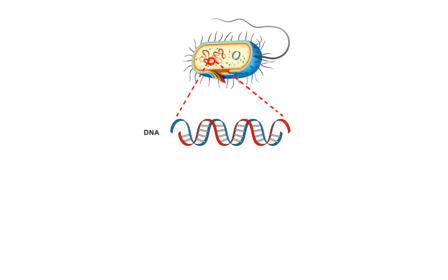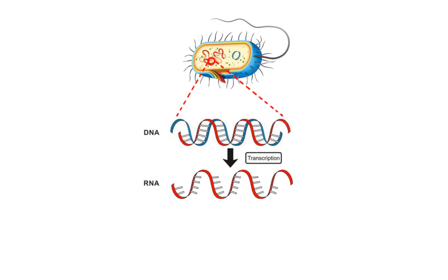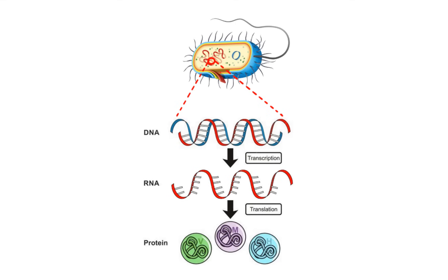This is done by using DNA as a template for the synthesis of an RNA molecule, a process known as transcription. Depending on its structure, RNA can then perform tasks directly or act as a blueprint for the synthesis of functional proteins in a process known as translation. Drugs capable of inhibiting DNA or RNA synthesis would render the bacteria unable to create proteins and replicate.